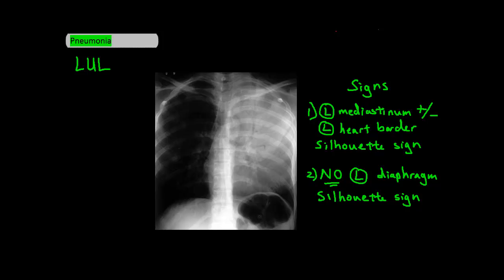Next up is a left upper lobe pneumonia, which can be anywhere in this area. The two signs to identify it include the silhouette sign of the left mediastinum and/or the left heart border, and secondly the lack of a silhouette sign of the left diaphragm. Remember there's no minor fissure on the left side. The left upper lobe borders both the left mediastinum and left heart border, so a pneumonia here can cause both borders to disappear, as you can see. The left upper lobe does not touch the diaphragm, so you should not see a silhouette sign of the left diaphragm — you can see the diaphragm border pretty clearly on this chest x-ray.